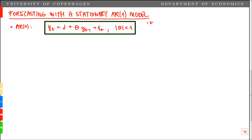Additionally, we make the usual assumptions: t goes from 1 all the way to capital T, epsilon_t is iid with mean 0 and variance sigma squared, and finally our initial value y_0 is given.